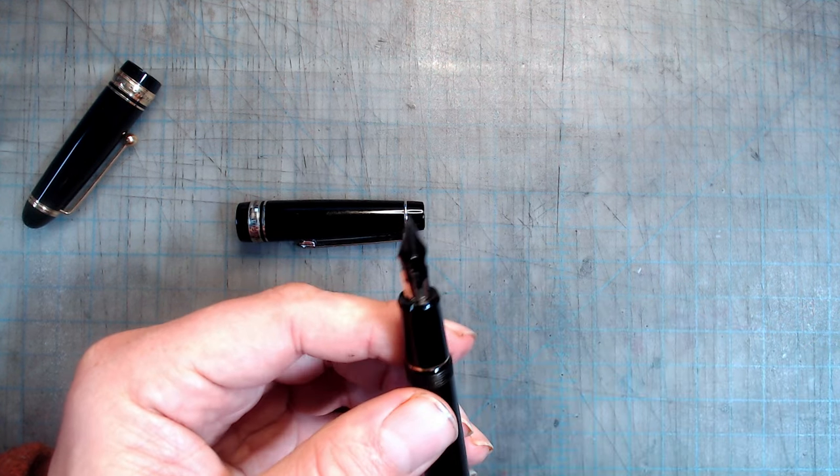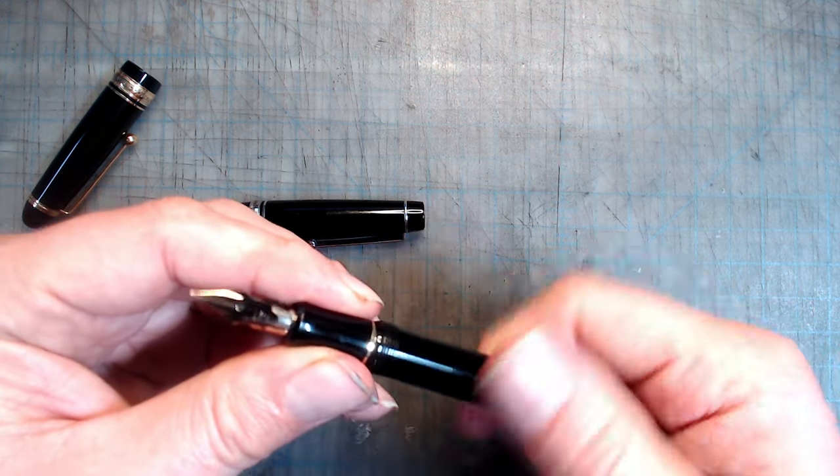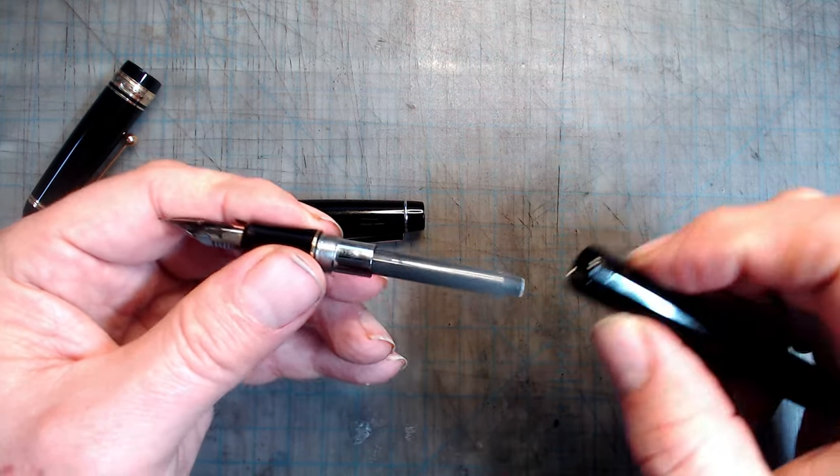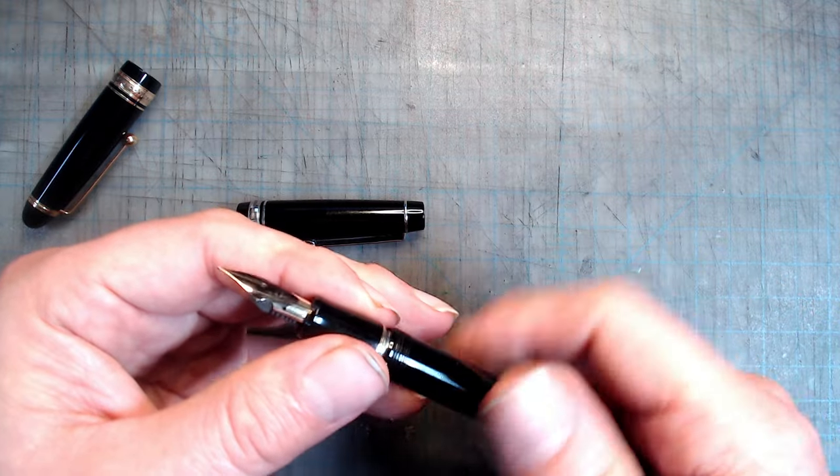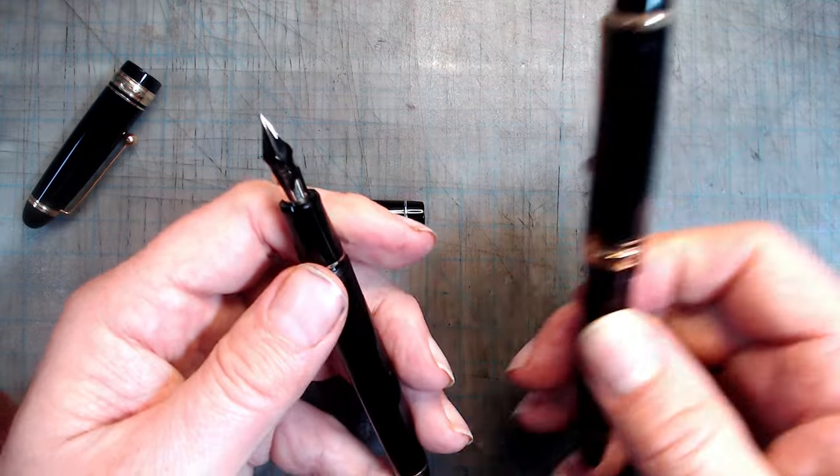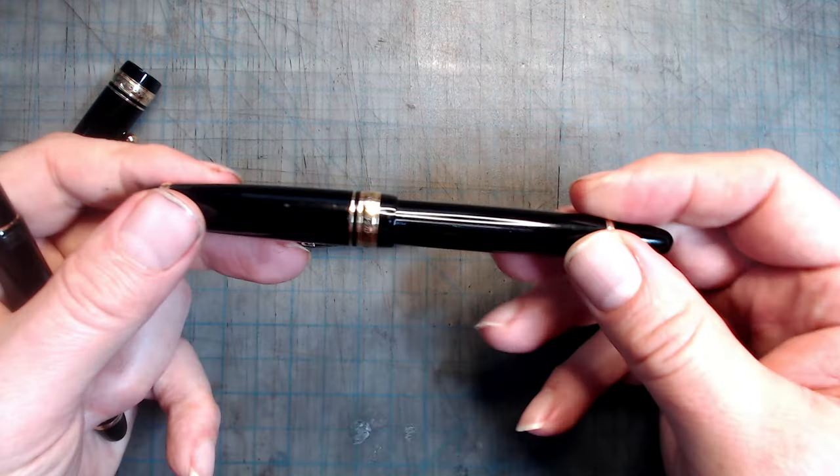Being a longer pen, it does take the CON70 converter, but in this case, I'm simply using a refilled cartridge. One advantage of this pen is that it uses the same feed as the excellent Pilot Custom 823, which is a vacuum filler that holds a lot of ink.